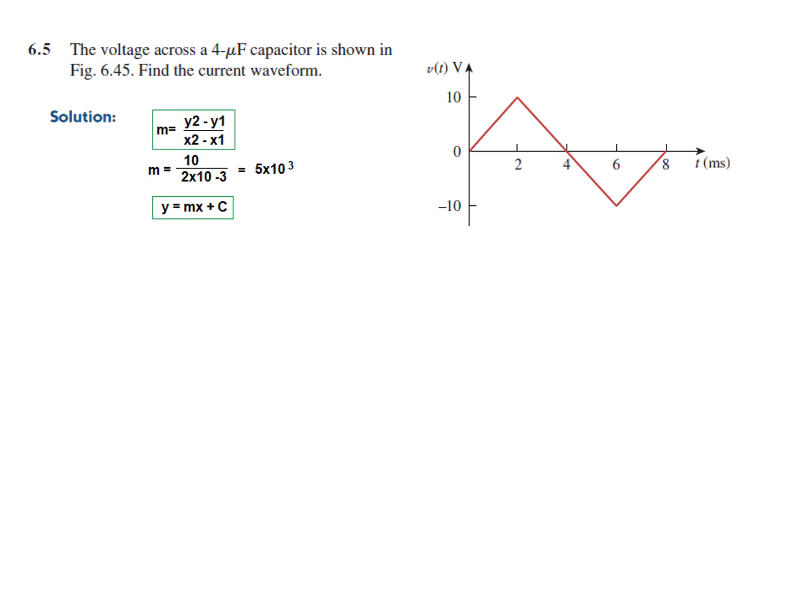This is the starting point, so y₁ is here and y₂ is here. Similarly x₁ and x₂ are identified. In the numerator, y₂ is 10, so 10 minus 0 equals 10. And x₂ is 2 and x₁ is 0, so 2 minus 0 is 2 — and this is in milliseconds, so 10⁻³. When we divide, the slope is 5 × 10³. Now this slope is for this line only, but since the other line also has the same distances — difference of 2 in the x-axis and 10 in the y-axis — the slope magnitude will be the same.